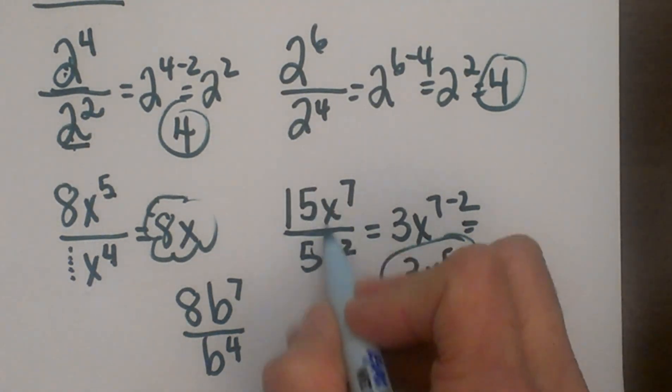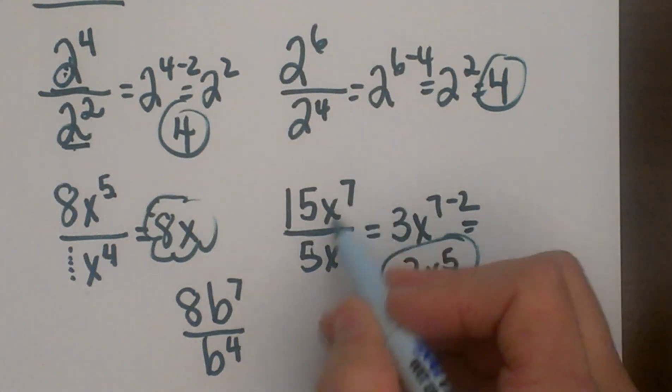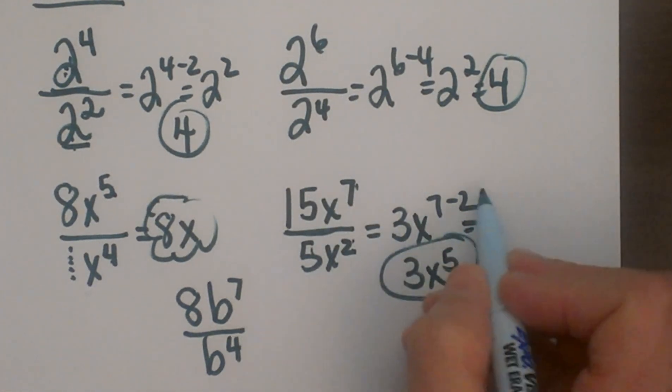So the rule is you divide the coefficients but subtract the exponents.